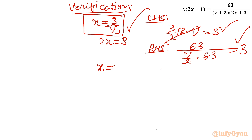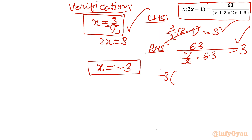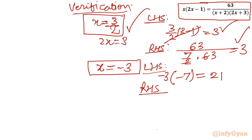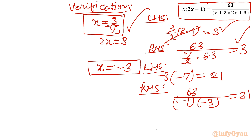For x equal to negative 3: LHS is minus 3 times (2 times minus 3 minus 1) equals minus 3 times minus 7 equals plus 21. RHS is 63 divided by (x plus 2) times (2x plus 3) equals 63 divided by (minus 1) times (minus 3) equals 63 over 3 equals 21. Both sides match. So we have 2 real and 2 complex solutions in total. I hope you like this video — thank you for watching, do not forget to like, share and subscribe. Bye-bye!